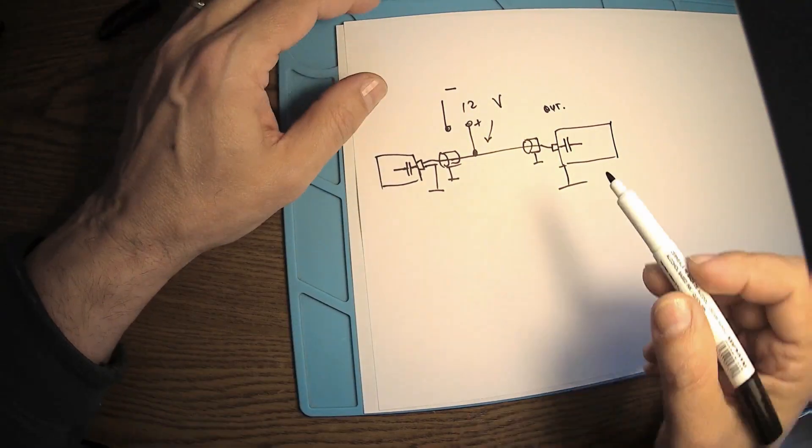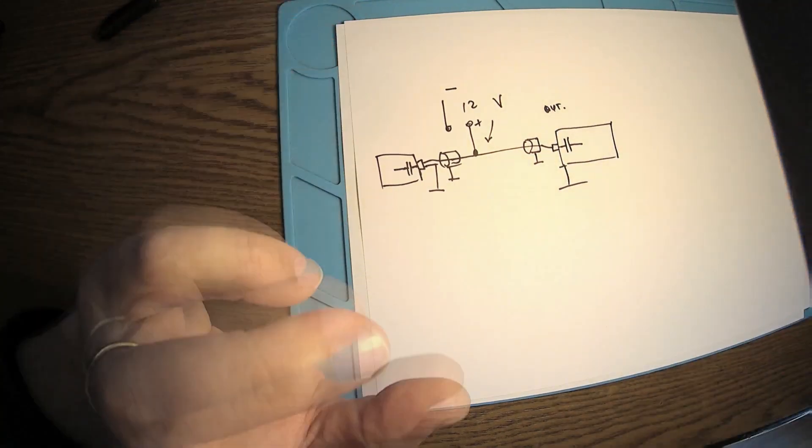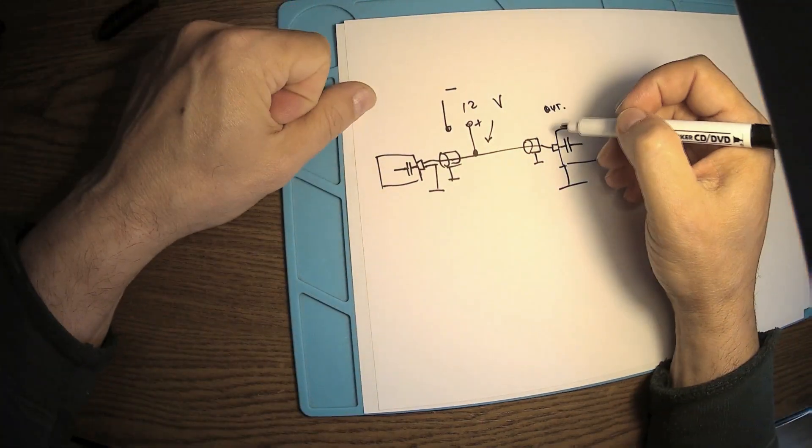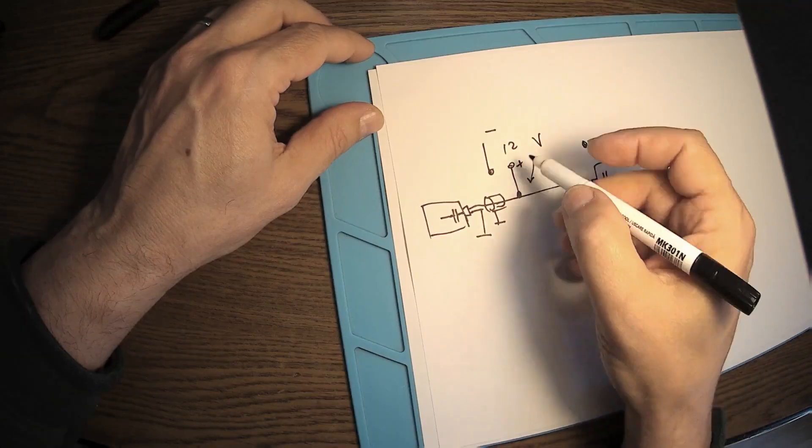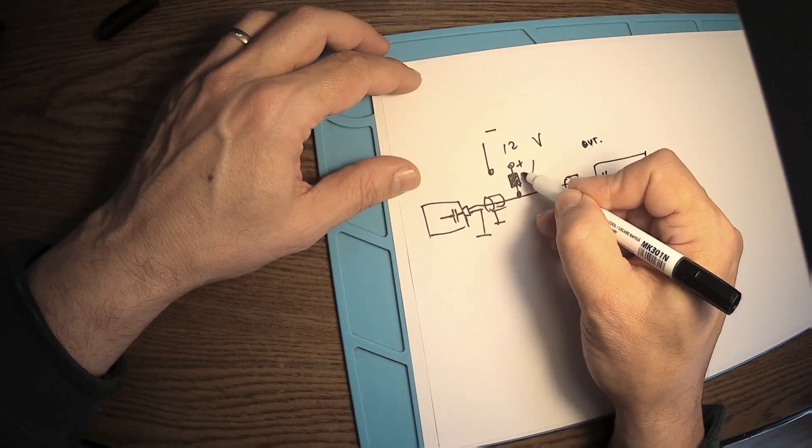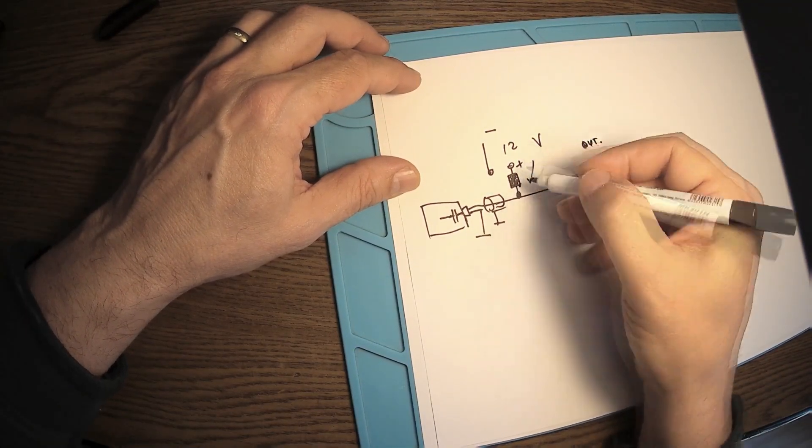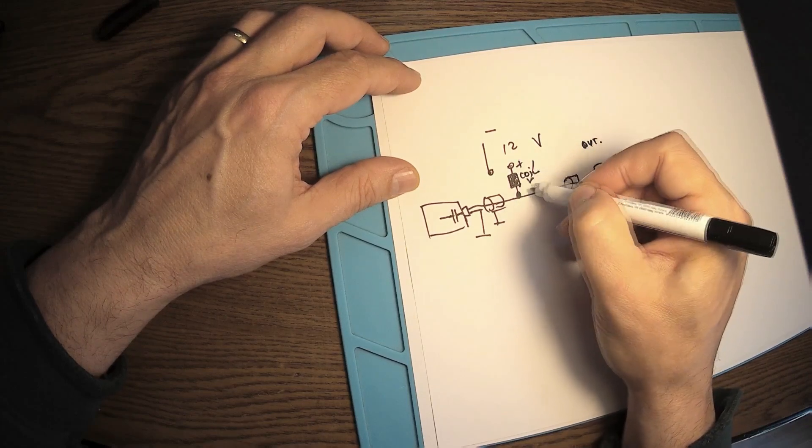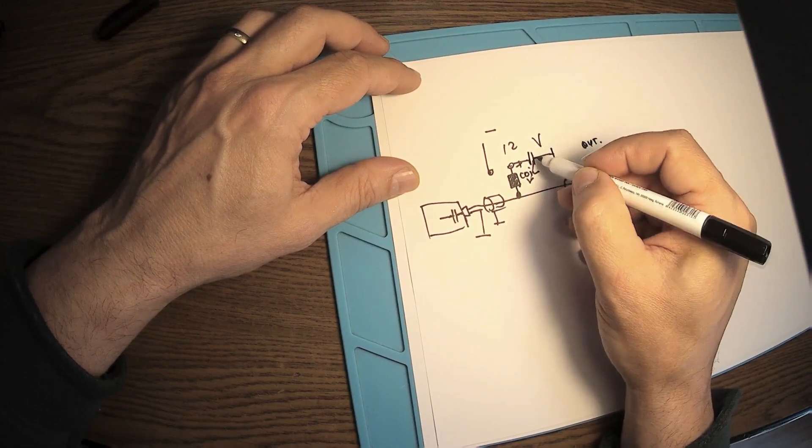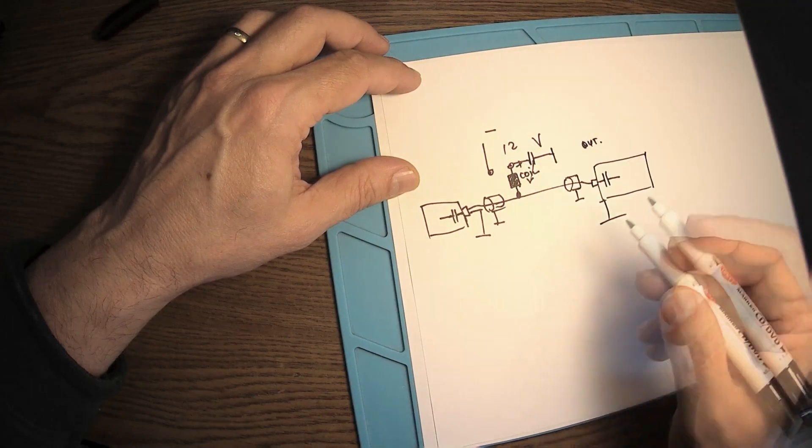There in DC. Now, the problem is we have somehow to decouple the RF signals also. How can we do that? Very simple. We apply here a coil, a few microhenry is enough, and also we're going to have a capacitor to the ground right here.